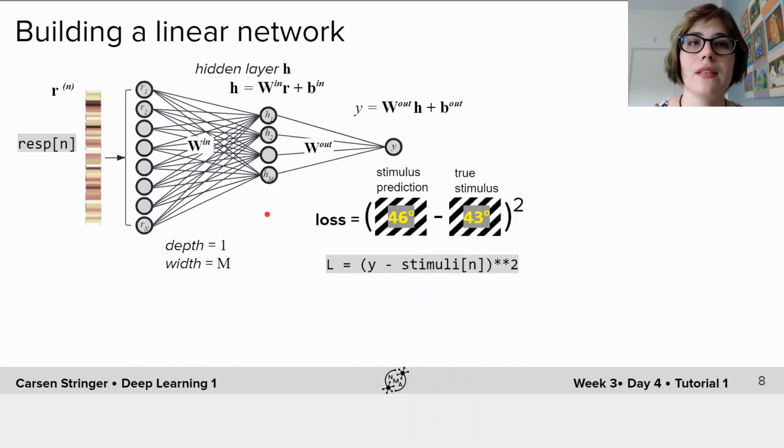But back to thinking about deep neural networks in their terminology. So adding this hidden layer means that the network now has a depth of 1 and a width of m. Increasing the depth and the width of this network can increase the expressivity of the model. In other words, how well it can fit complex nonlinear functions. Many state-of-the-art models now have close to 100 layers, but for now let's start with adding this single hidden layer, so working with a model with a depth of 1 and see if we can improve our prediction of the stimulus.